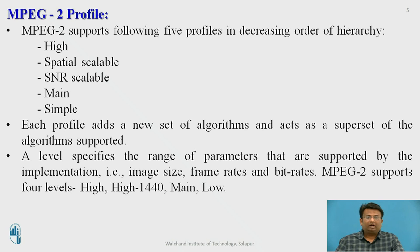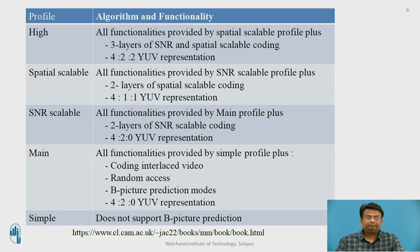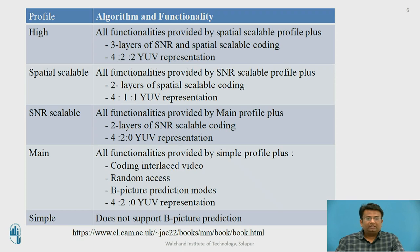MPEG-2 supports four levels: high, high-1440, main, and low. In the case of the high profile, all functionalities are provided by the spatial scalable profile, plus it includes three layers of SNR and spatial scalable coding, and it supports 4:2:2 YUV representation.